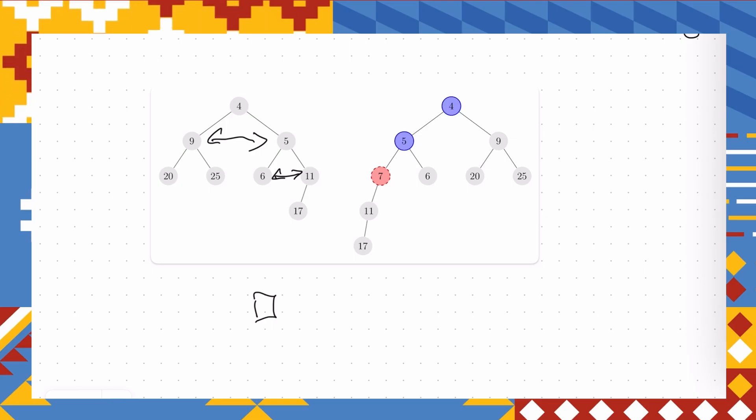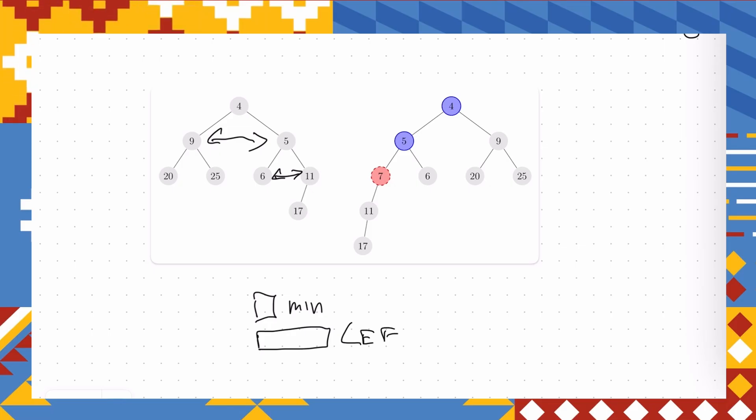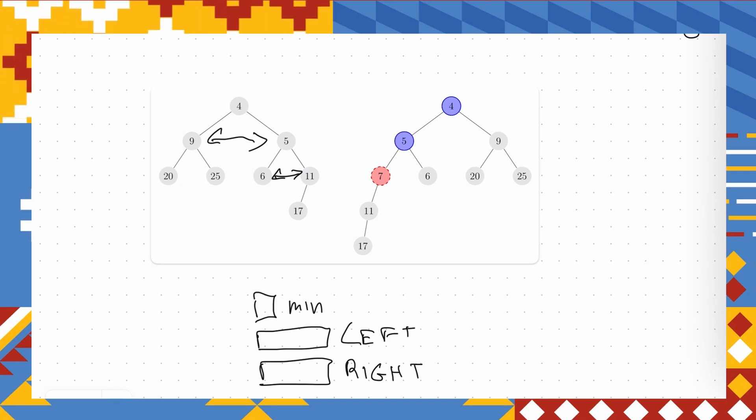So when we merge the results, we have our minimal element. We have left subtree, which is some order, and we have right subtree, which is some other order. Let's try to figure out how we can merge this.